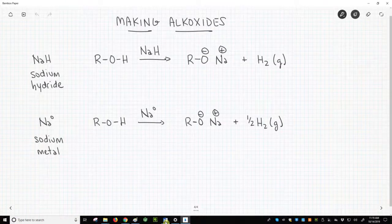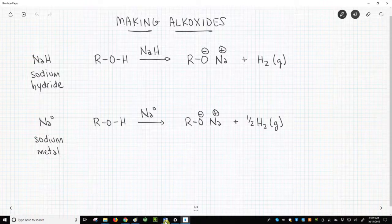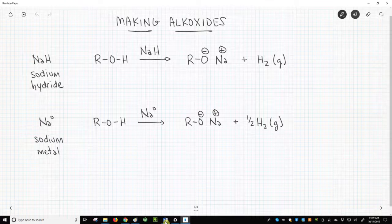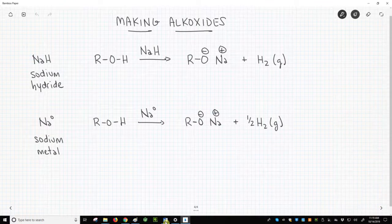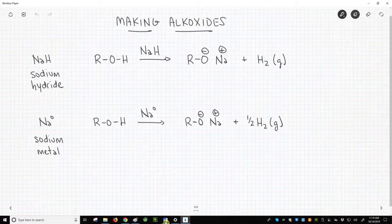If you go into lab, you are far more likely to find bottles of alcohols like methanol or ethanol than alkoxides. So when a procedure calls for an alkoxide, how do you get it? Well, normally you make it. There are two main ways to make alkoxides, and both are on the screen.